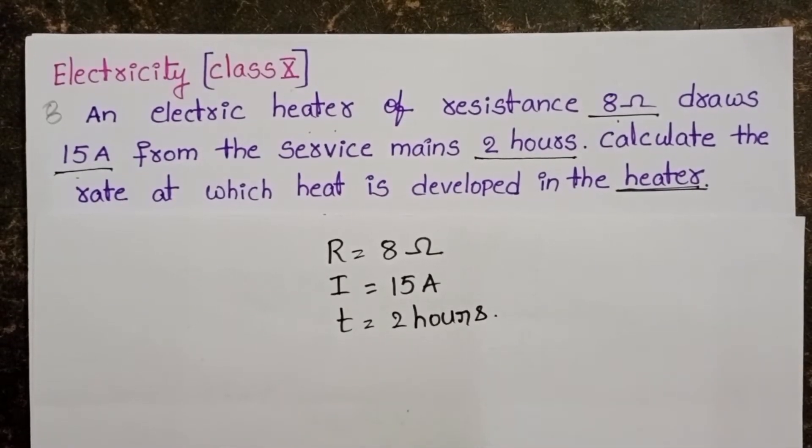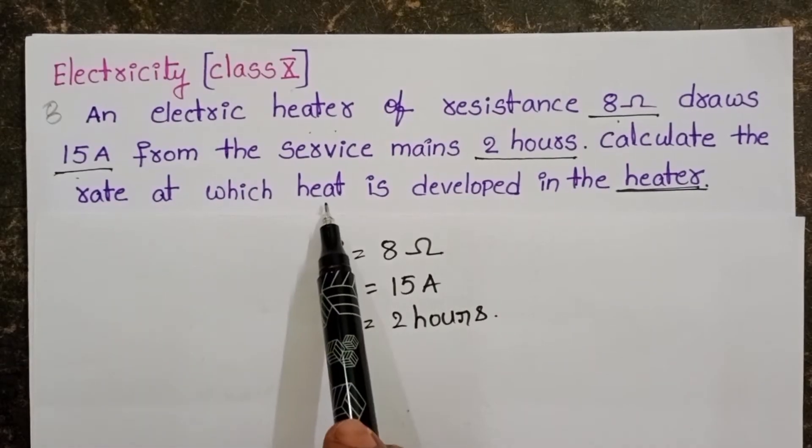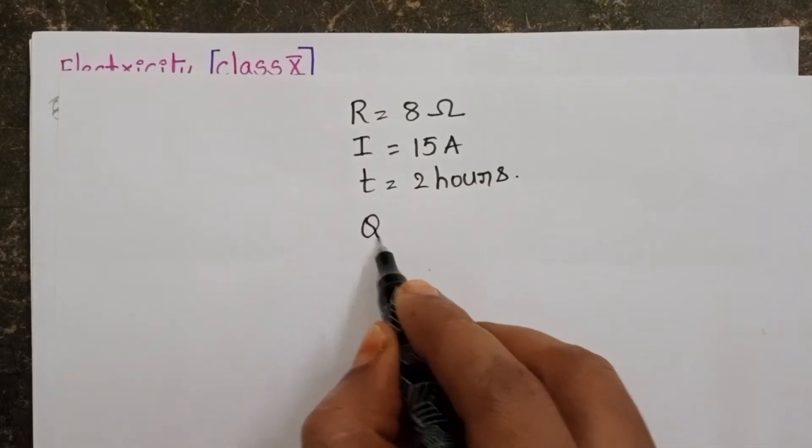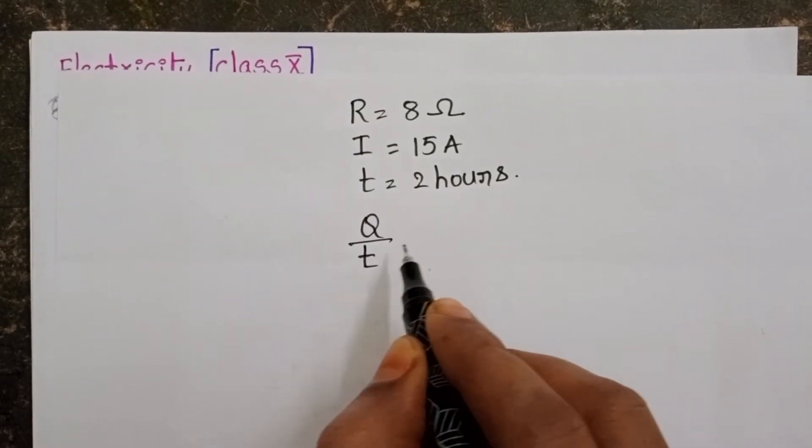Here we have to find out the rate at which heat is developed in the heater. Rate of heat, Q by t.